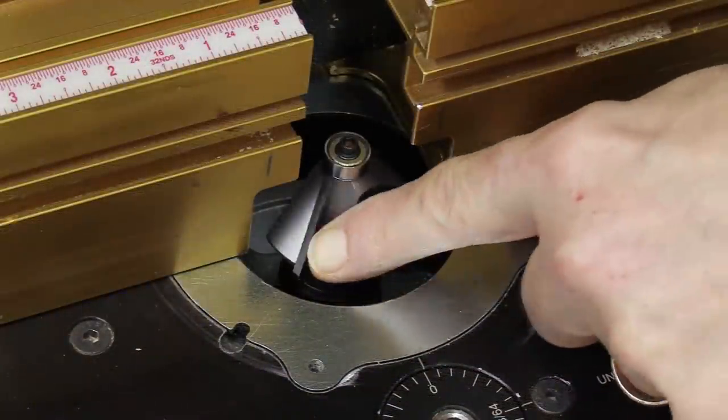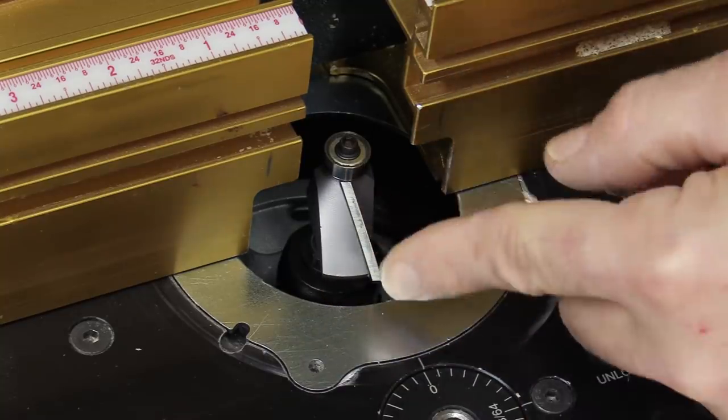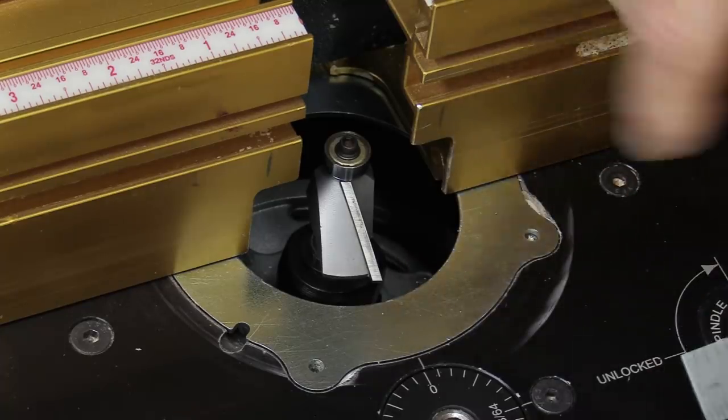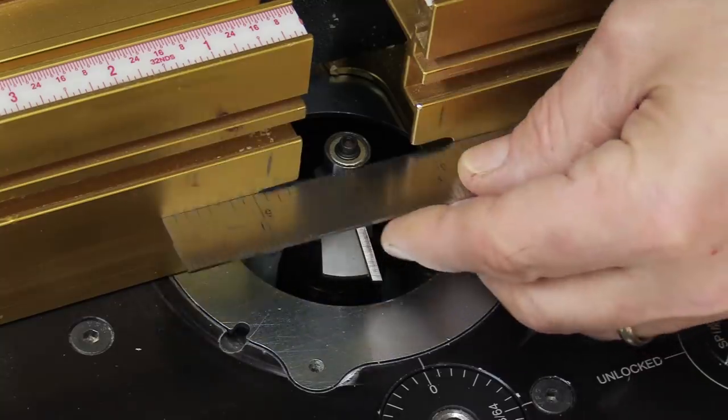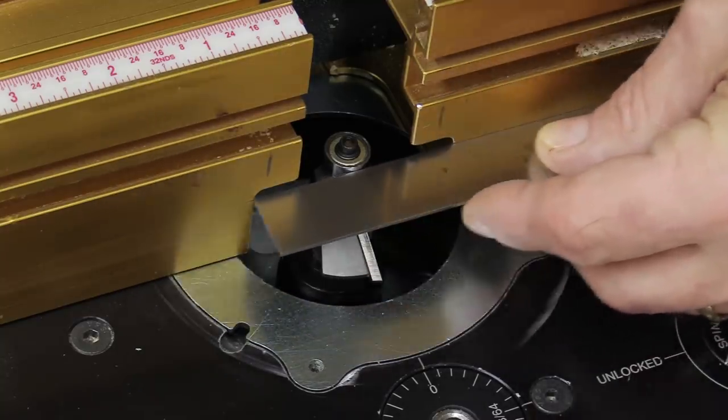I've got the larger bit set up in my router table and I've got it raised up so it's not going to cut a full depth of cut. Actually, I know it's going to be about a sixteenth of an inch light at this point. But as far as how far back this is set in relation to the fence, I've got the ball bearing just behind the fence itself.